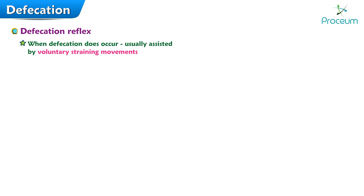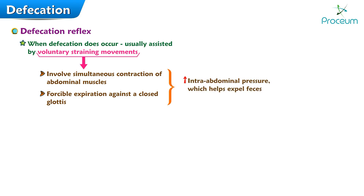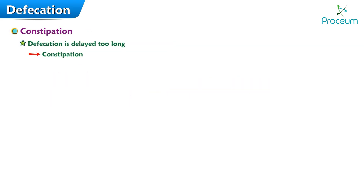When defecation does occur, it is usually assisted by voluntary straining movements that involve simultaneous contractions of the abdominal muscles and a forcible expiration against the closed glottis. This maneuver greatly increases intra-abdominal pressure, which helps expel the feces. If defecation is delayed too long, constipation may result.